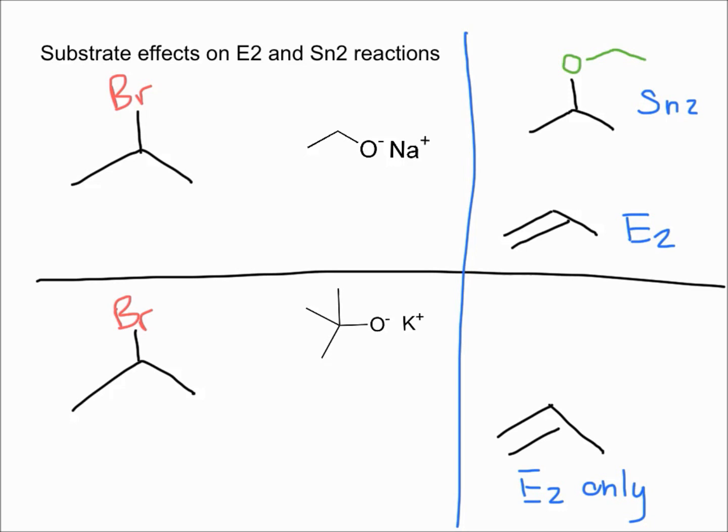One really important thing to remember is that if you add heat to a reaction, it's always going to favor an elimination reaction. If you ever see heat designated by a delta sign, a little triangle, that's a great hint to pick the elimination product.